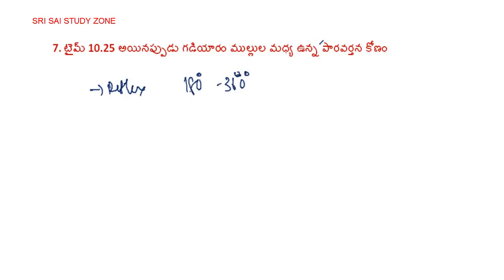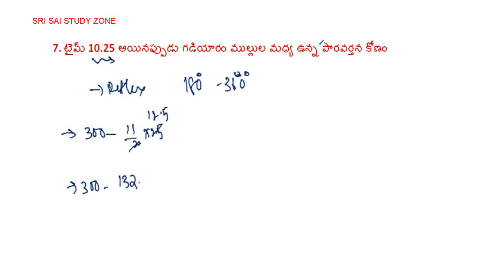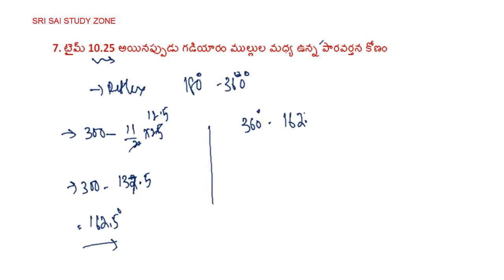Next question: time 10:25 is equal to 60 degrees. We need 162. So 300 minus 137.5 gives a value equal to 162.5 degrees. But 360 degrees minus 162.5 degrees is equal to 197.5 degrees.